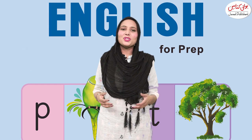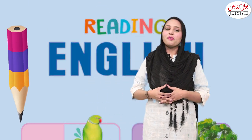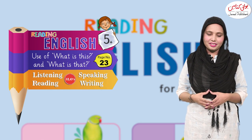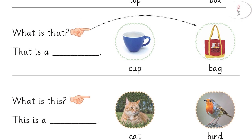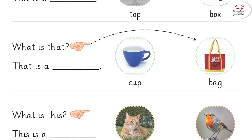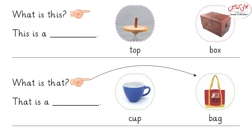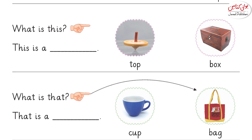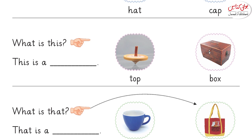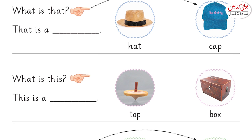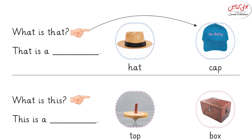Bismillahirrahmanirrahim, assalamu alaikum. This is Khanum Ansa Shahzadi, welcome to Javed Publishers. Today we will complete the exercise with the use of 'what is this' and 'what is that'. We ask 'what is this' when the thing is nearby, and 'what is that' when the thing is far from us. Today we will complete the incomplete sentences using these two questions.